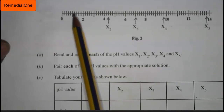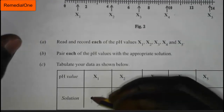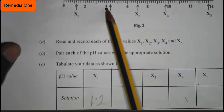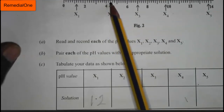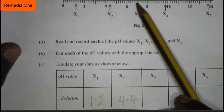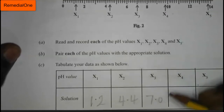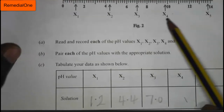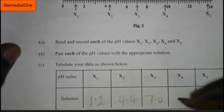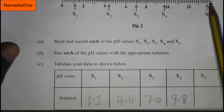Looking at x1 carefully, it reads 1.2, so we write 1.2 in the table. Moving to x2, here is 4, so x2 is at 4.4. For x3, it falls between 6 and 7, so x3 is 7.0. For x4, between 8 and 9, x4 is 9.8. And x5, between 12 and 13, x5 is 13.8.